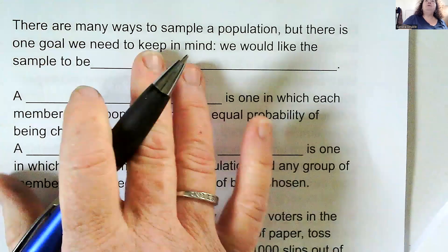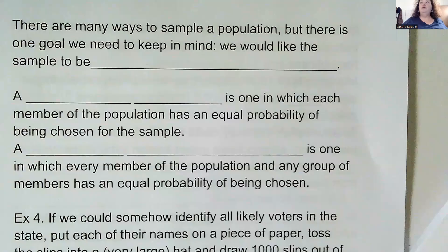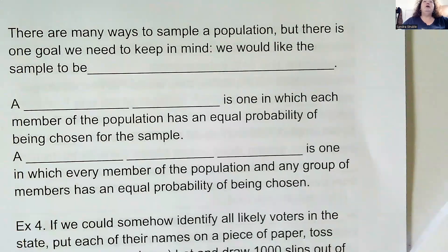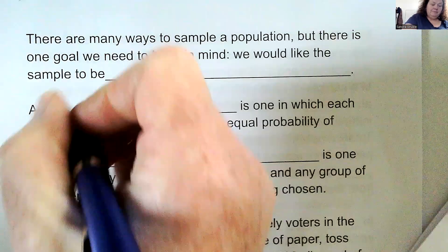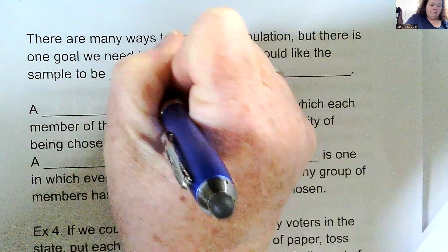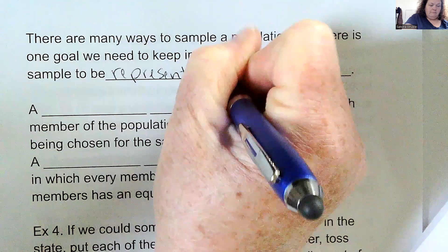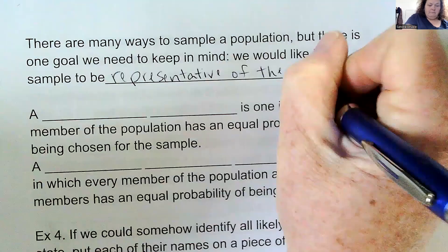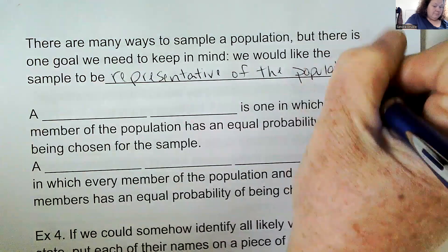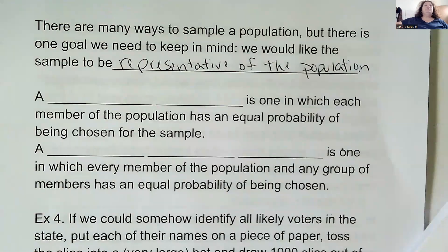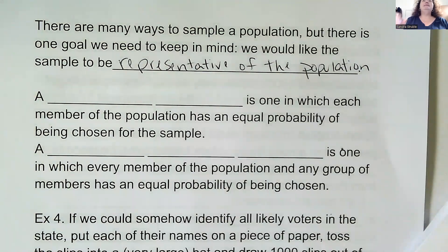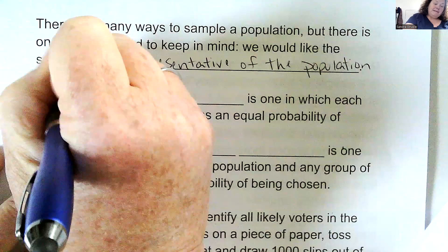There are many ways to sample a population, but there's one goal that we need to keep in mind. You're going to hear me say this a lot: we would like the sample to be representative of the population. A random sample is one in which each member of the population has an equal probability of being chosen for the sample — the best kind.